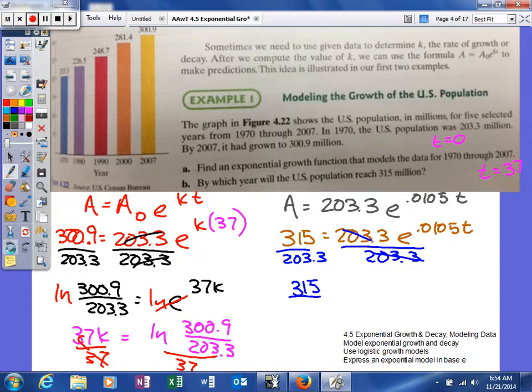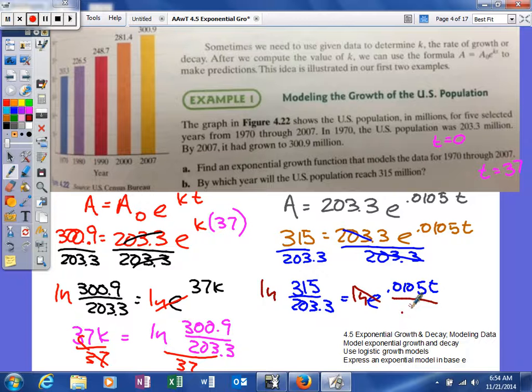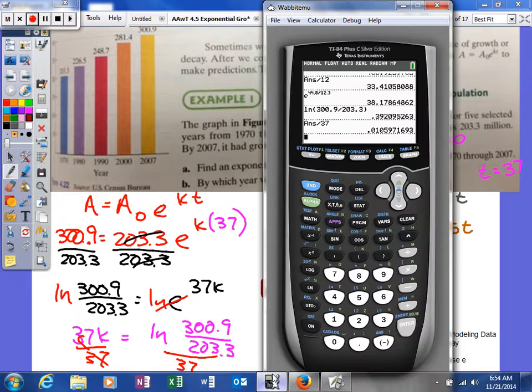I'll take the natural log of both sides. Now it's going to cancel and I'm going to divide both sides by this.